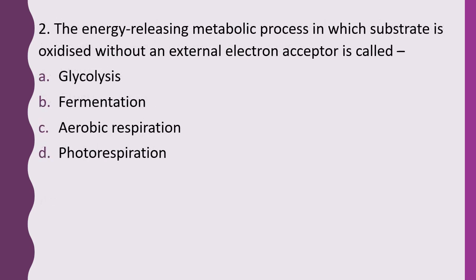Question 2. The energy-releasing metabolic process in which substrate is oxidized without an external electron acceptor is called: glycolysis, fermentation, aerobic respiration, or photorespiration. The correct answer is option B, fermentation. There is no external electron acceptor in fermentation and the substrate gets oxidized.